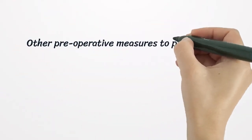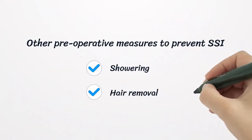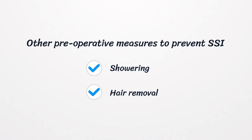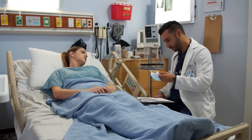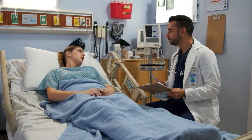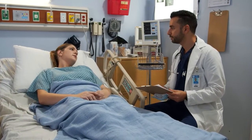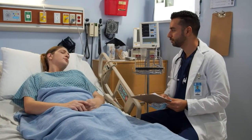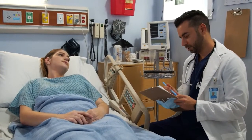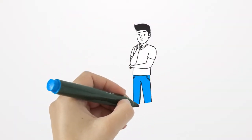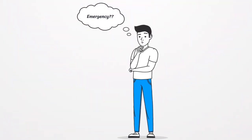Other pre-operative measures to help prevent SSIs include showering the night before surgery and removing excess hair in the surgical region. These are usually done by the patient at home. For instance, if you are scheduled for an appendectomy, the doctor will instruct you to take a shower the night before and to remove any hair present on your lower abdomen.